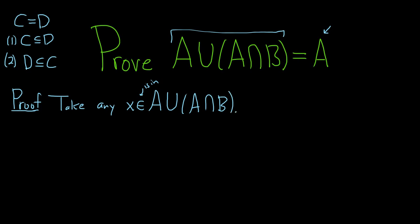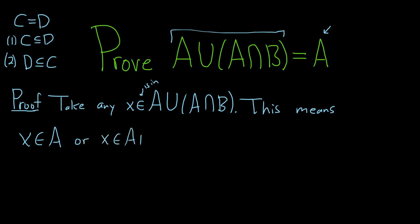At this point there's really only one thing you can do and that's to use the definition of union. So this means — well, what does it mean to be in the union? It means that it's in the first set, so X is in A, or it's in the second set: X is in A intersection B.